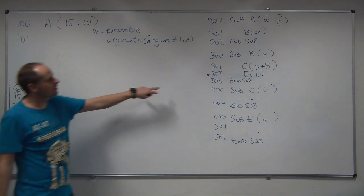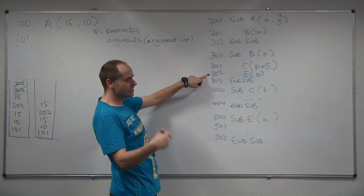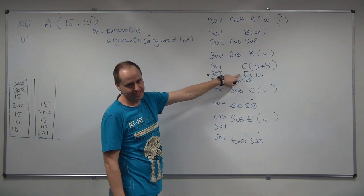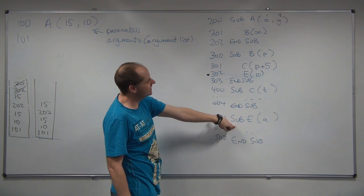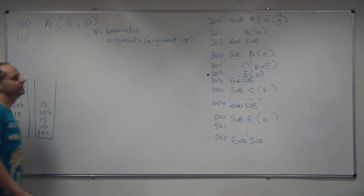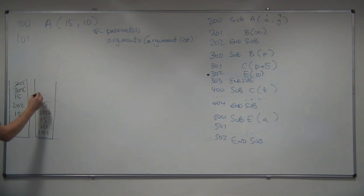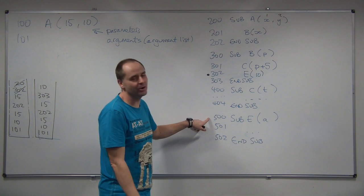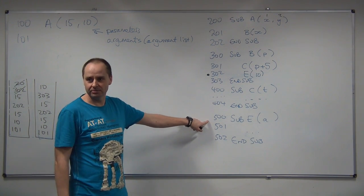So, we've come back to this line, because that's the return address. But this is another subroutine call. We're passing a parameter to subroutine E of 10. The return address this time is 303. The parameter value, there's only one, is 10. So, as we've done that, we can go off, change the program count, and so we go to this subroutine.